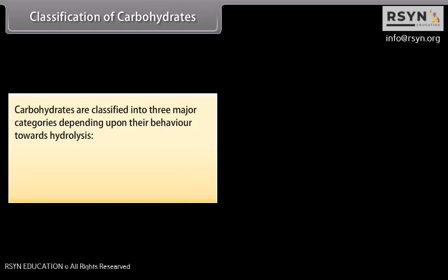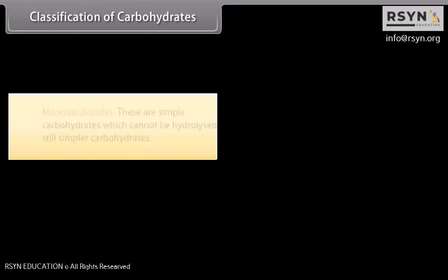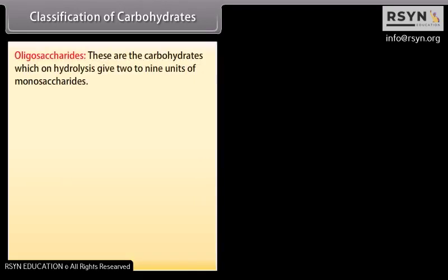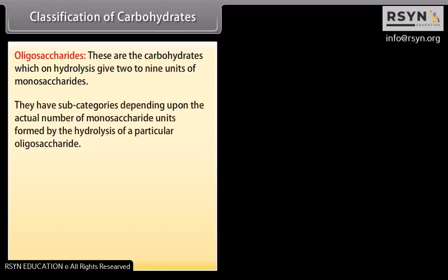Carbohydrates are classified into three major categories depending upon their behavior towards hydrolysis: monosaccharides, oligosaccharides, and polysaccharides. Monosaccharides are simple carbohydrates which cannot be hydrolyzed to still simpler carbohydrates, for example glucose and fructose. Oligosaccharides are carbohydrates which on hydrolysis give two to nine units of monosaccharides, with subcategories depending upon the actual number of monosaccharide units formed.